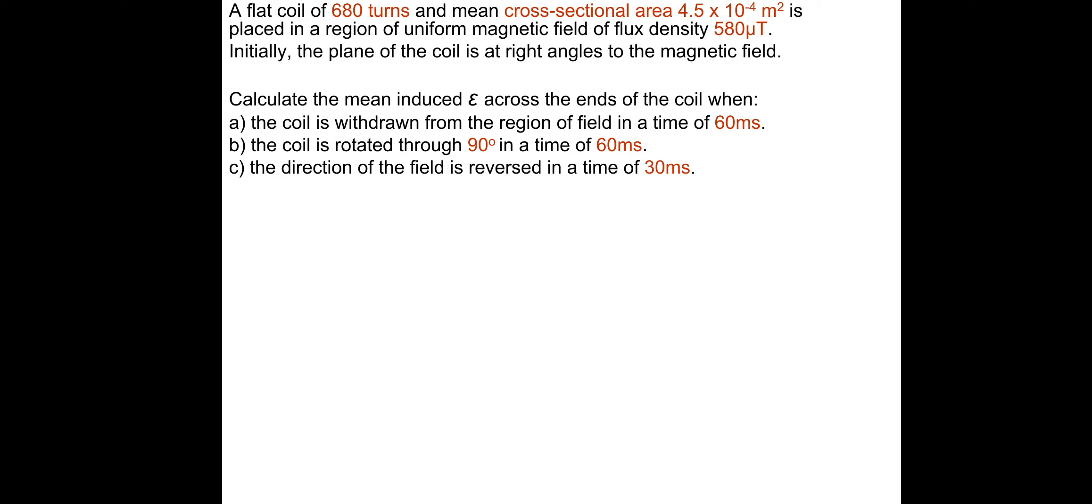Last one. There's a couple of ways of doing this. So it says that the direction of the field is reversed. Now if you've remembered that the magnetic field strength is a vector, then you should have caught with this one. Okay, so essentially if we did NBA... So I'll just do this. So that would be 680 times the magnetic flux density of 580, I'll just put micro tesla this time just to save room, multiplied by the area, the 4.5 times 10 to the minus 4. That gives us a value, so the maximum flux of 1.7748 times 10 to the minus 4 weber turns.